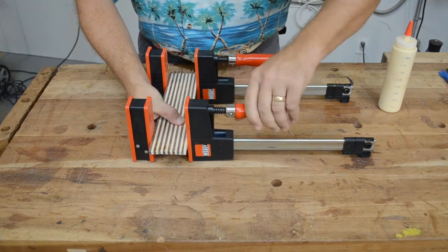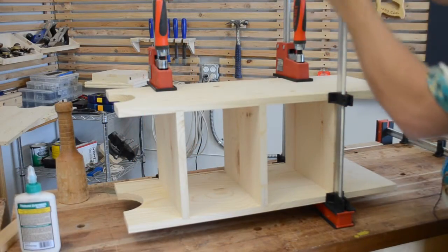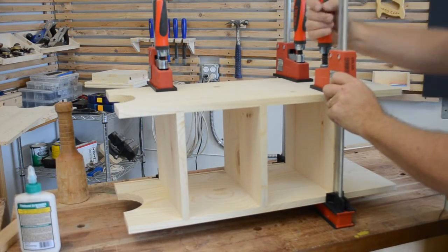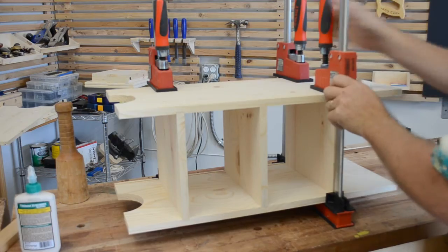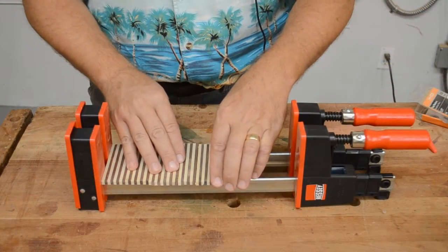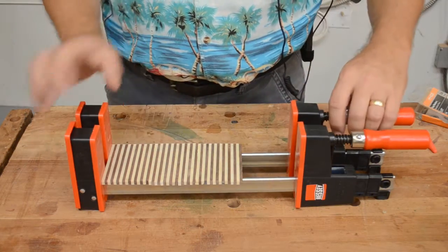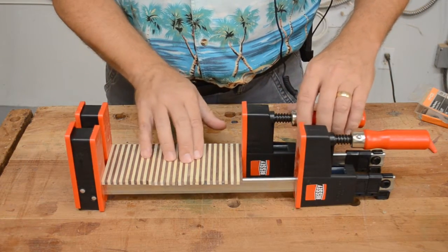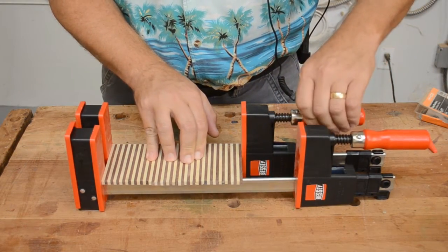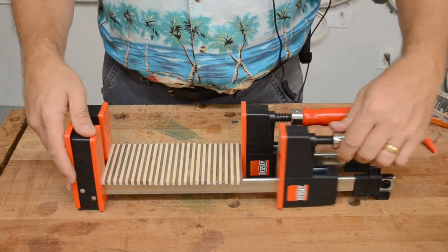Parallel jaw clamps keep your projects aligned as you work, and while you certainly want the extra size and clamping force of Revo K-body clamps when building cabinets or furniture, Bessey's Revo Junior parallel clamps are a perfect solution for smaller projects that require accurate alignment in a compact, easy to handle form.